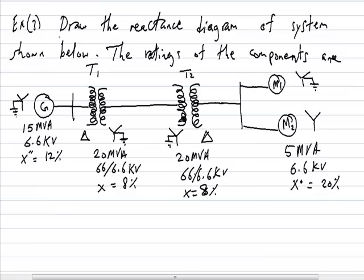Example number three: draw the reactance diagram of the given power system. The generator is Y-connected, neutrally solidly grounded, rated 15 MVA, 6.6 kV, with a synchronous reactance of 12%. The transformer uses a delta-star connection. Two motors are connected in parallel to transformer number two.